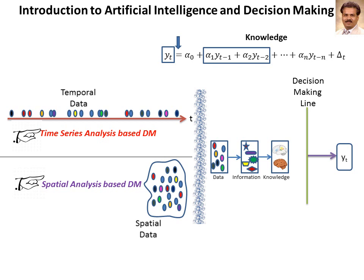The equal sign is actually the decision maker, which produces output — which is yt in this case. This is how decision making works; it is very simple and easy to understand. Similarly, in the spatial domain, we have the same situation. The data here are not available in a time series way, but available in a time parallel way. In this case also, the algorithm makes a decision using knowledge, which is obtained from information built using time parallel or spatial data.